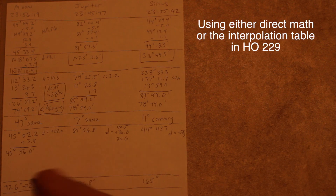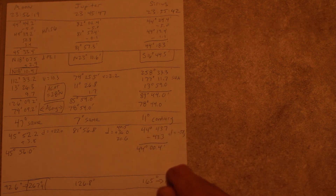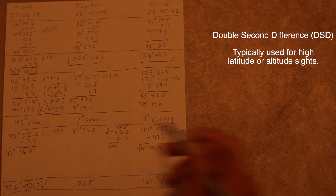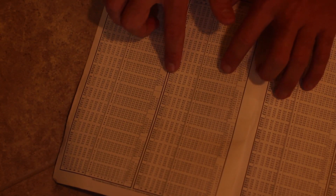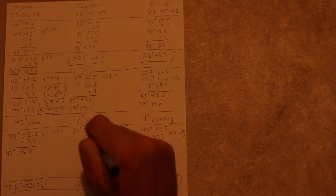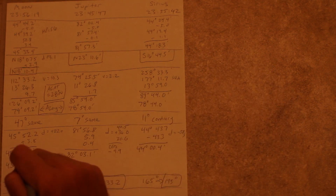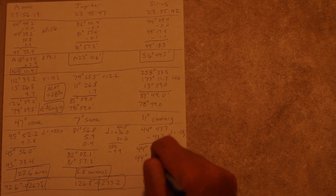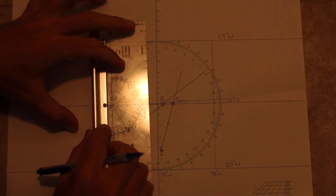Now I'll apply the D corrections to each sight and correct the azimuth as required. For the double second difference from Jupiter, I'll take the difference between the tabulated figure above and below, then enter the interpolation table with that figure to pull out another correction. I'll need to apply both the regular D correction and the double second difference correction to Jupiter. Next, I'll compare the computed and observed values to obtain my intercept, then head to the plotting sheet, lay in each LOP, and watch the magic happen.